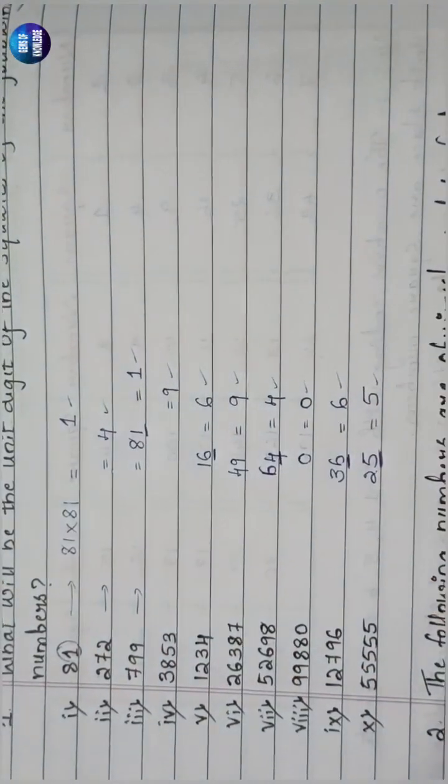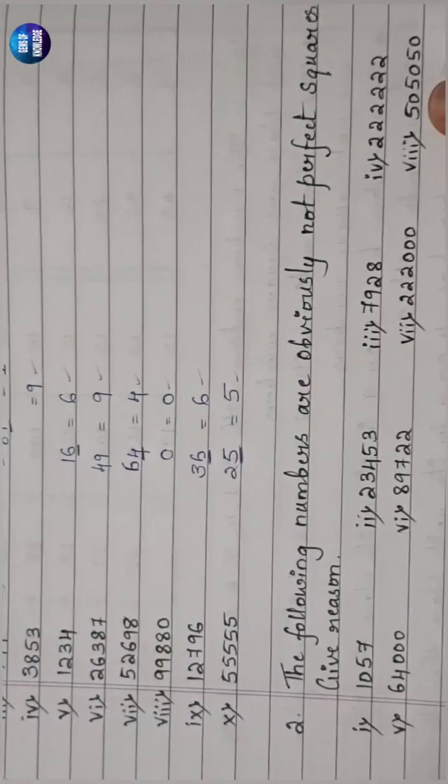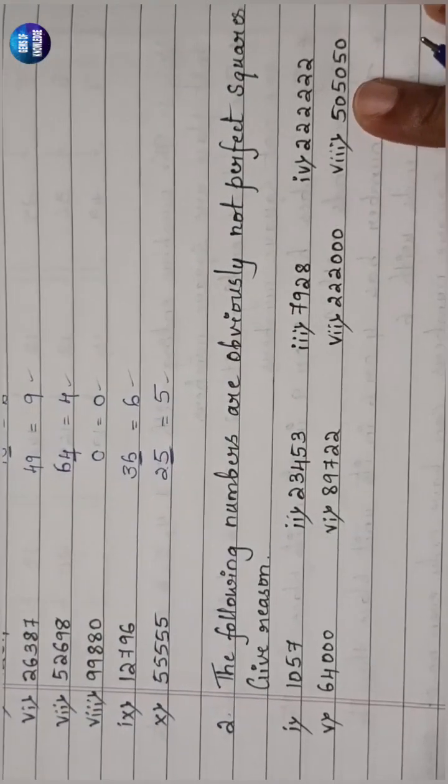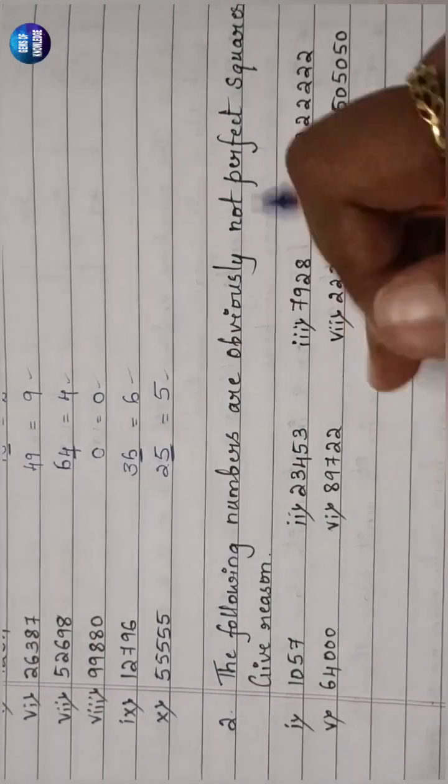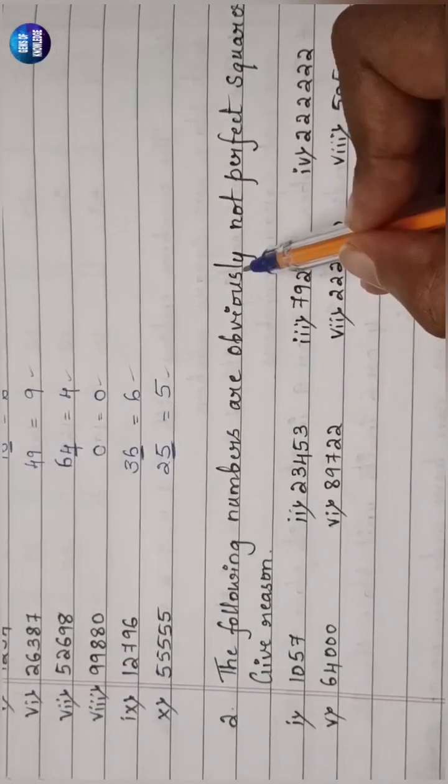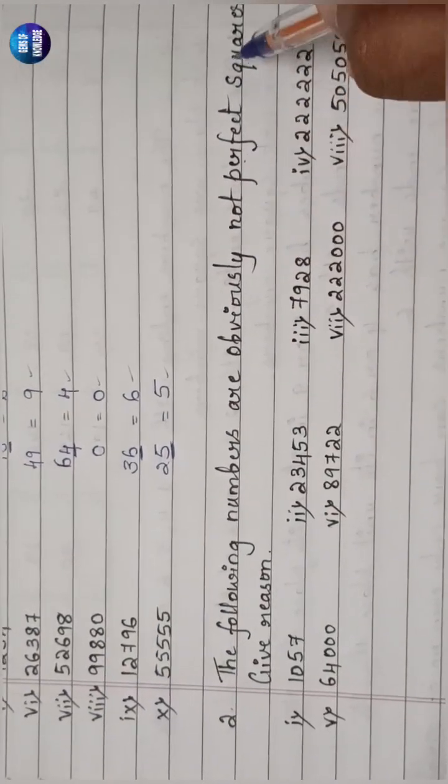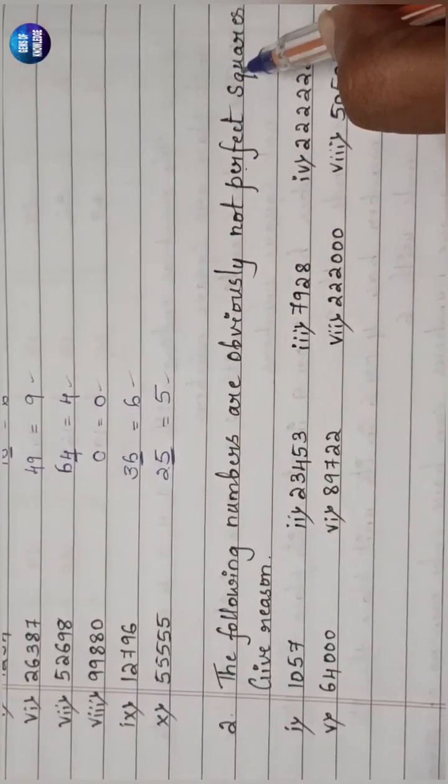So the answers are: 1, 4, 1, 9, 6, 9, 4, 0, 6, and 5.